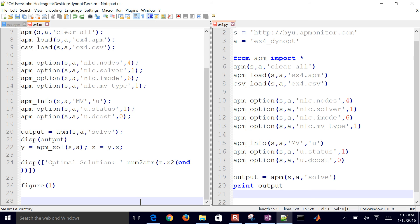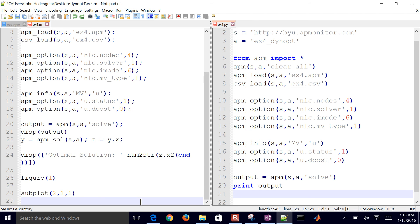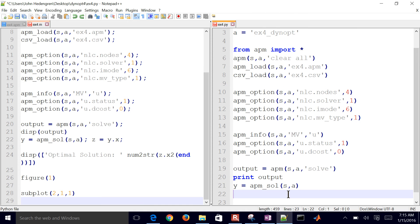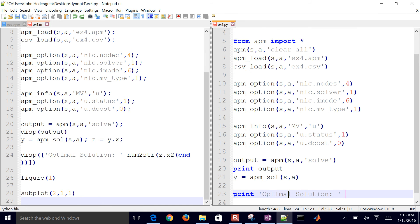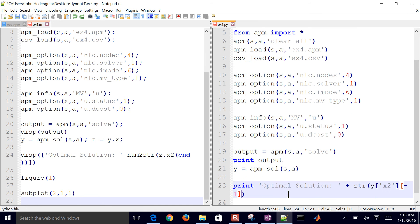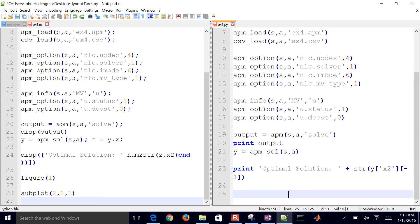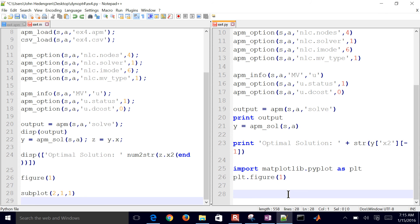And then I'm going to make a figure. And let's do this in Python to get the solution, print the optimal solution, convert it to a string just for the very last point in x2, and then I'm going to create a figure.